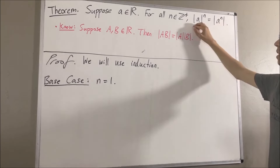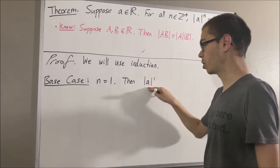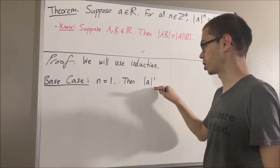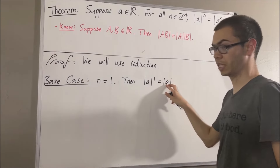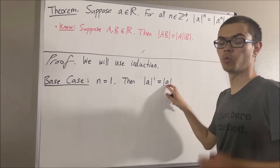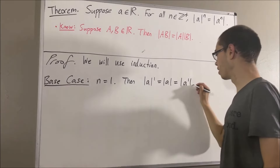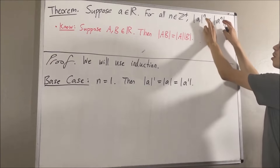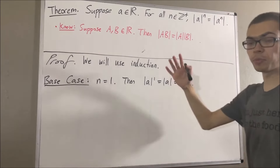Let me start by writing the left hand side. We know that any real number to the power of 1 is just equal to itself, so this is just equal to the absolute value of a. In that case, a must equal a to the power of 1, so we can replace a with a to the power of 1. So we have shown that this is true in the case where n equals 1, and this completes the base case.